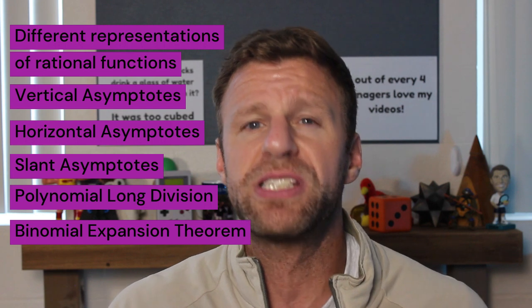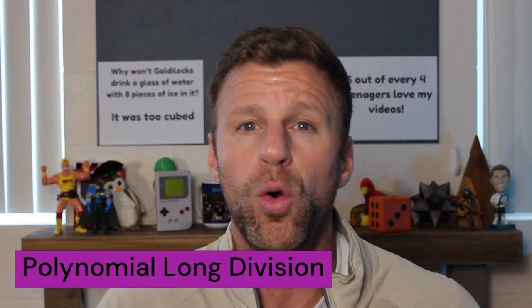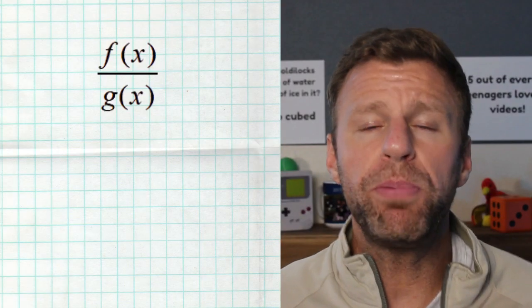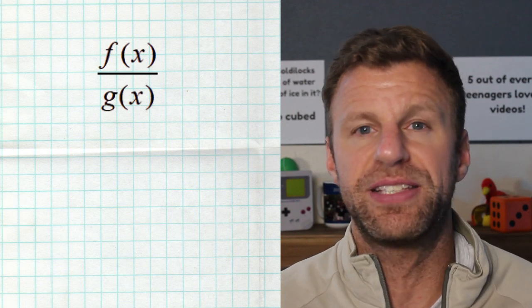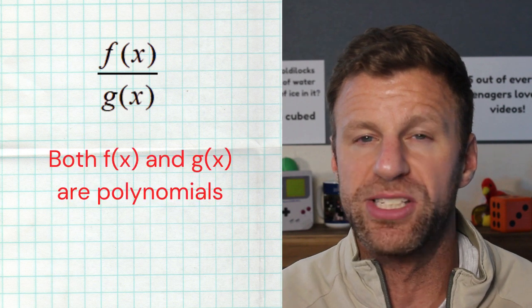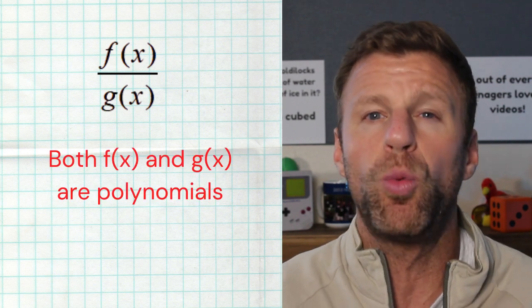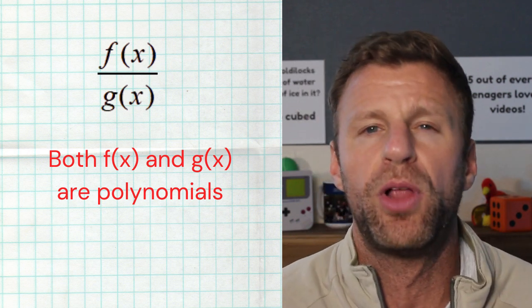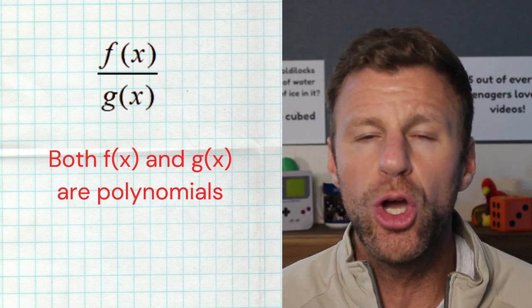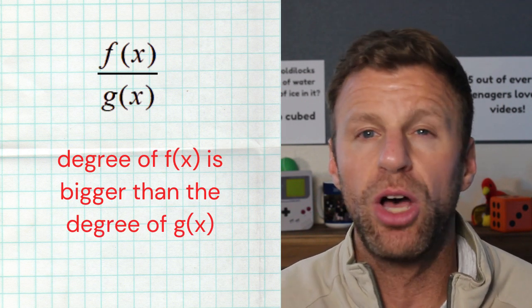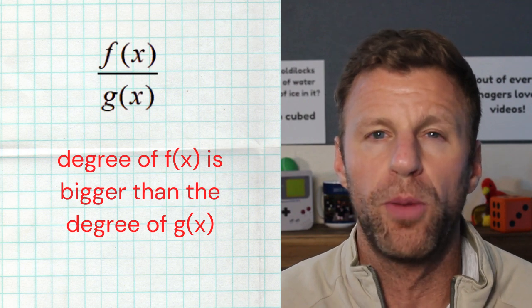In this specific video, I want to start with talking about long division — how to actually perform it, when to perform it, and what it all looks like. When we perform long division, we're taking a function f(x) divided by another function g(x), and they're both polynomials. There's one really important rule: the numerator's degree must be bigger than the denominator's degree to perform polynomial long division.